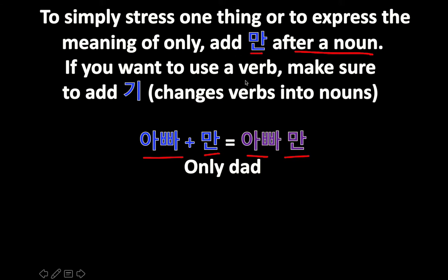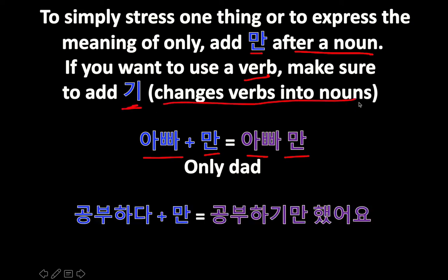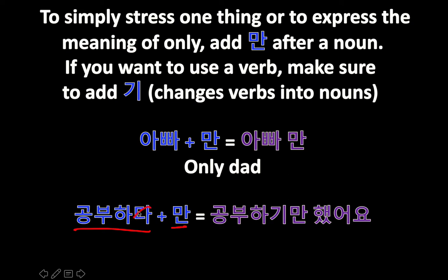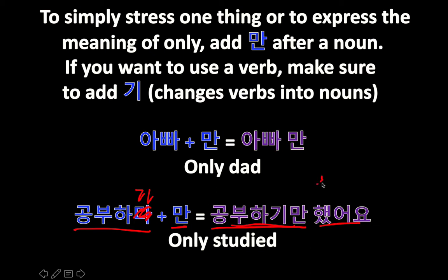You can also use 만 with verbs, but if you use it with verbs you have to add 기 to the verb, which changes it into a noun. For example, 공부하다 means 'to study.' To add 만, take away the 다 and add 기, so it becomes 공부하기만 했어요 — 'I only studied.' Usually, because this becomes a noun, you add 하다 afterwards.